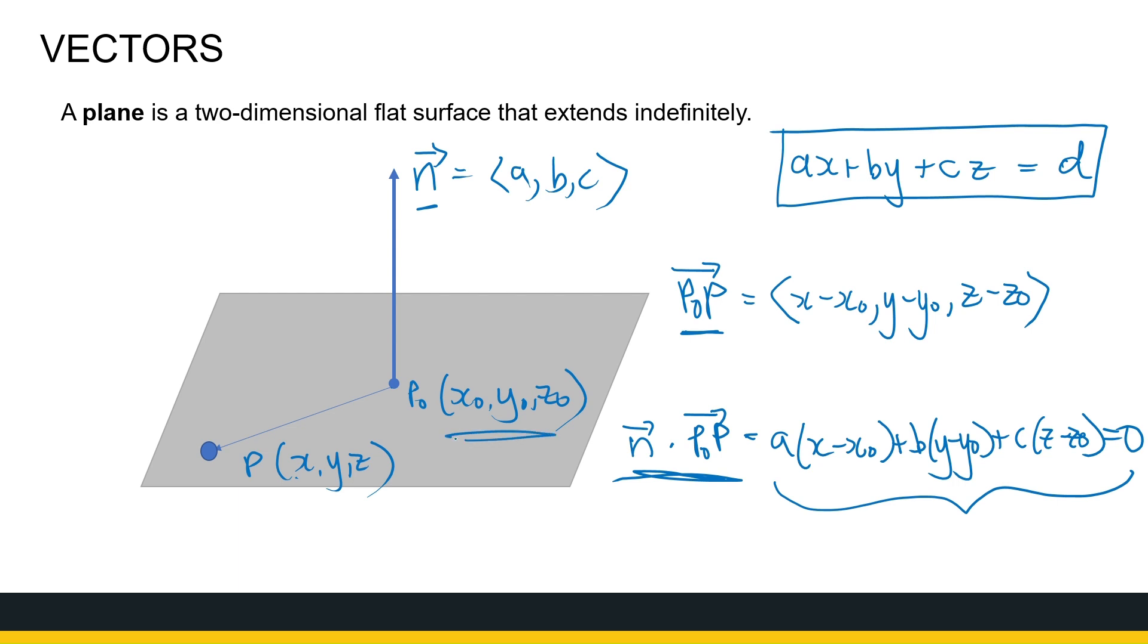So what do I need? I need a point on the plane and a vector that's perpendicular to that plane. With those two pieces of information, I can generate the equation of a plane. So let's take a look.